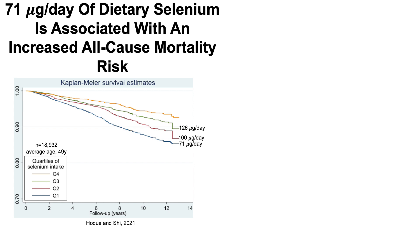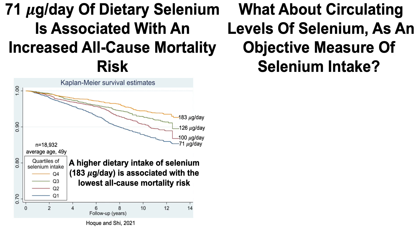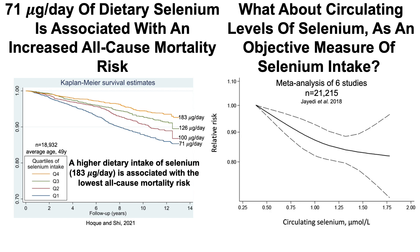The group with the lowest all-cause mortality risk averaged 183 micrograms per day. Now, dietary studies can suffer from under-reporting or over-reporting, as people have to remember what they ate. In contrast, circulating levels of selenium are a more objective measure, since what's in the blood directly reflects how much selenium was consumed.